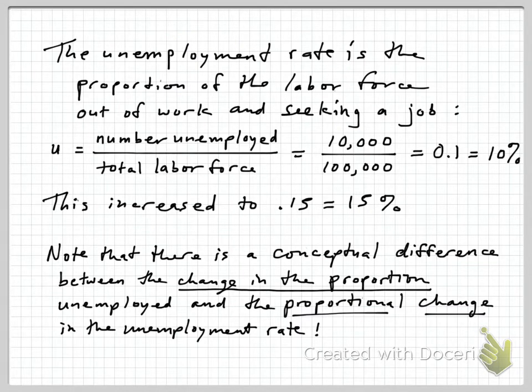Well, let's review quickly what the unemployment rate is. The unemployment rate is defined as the proportion of the labor force that's out of work and seeking a job. So as an example, you could end up with a 10% unemployment rate if we had 10,000 people who were unemployed and there were a total of 100,000 people in the labor force. And again, the labor force is people who are working or actively looking for work.